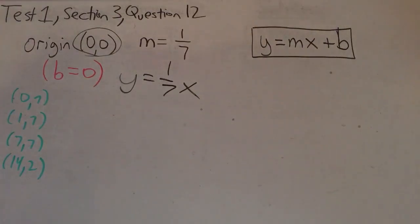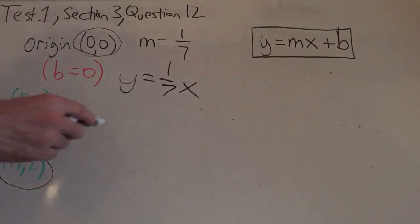Well, 1/7 times 0 is 0, not 7. 1/7 times 1 is 1/7, not 7. 1/7 times 7 is 1, not 7. And 1/7 of 14 is, in fact, 2. So the answer is choice D.